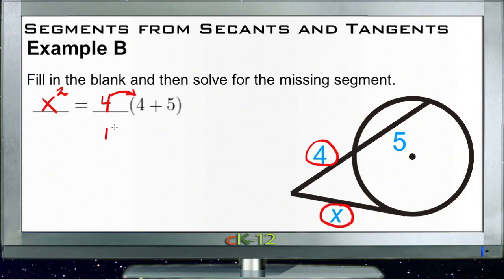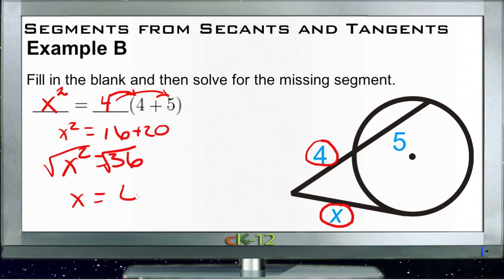So now if we actually solve this, much like the last one, we'll have 4 times 4, that's 16, and 4 times 5, that's 20. So that's going to give us x squared is equal to 16 plus 20, or x squared is equal to 36. Take the square root of both sides and we get x is positive or negative 6. And since it obviously can't be a negative length, just like the last one, x must be 6 units long.